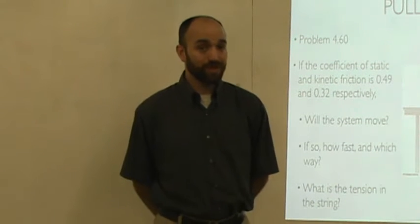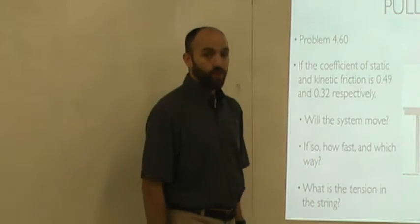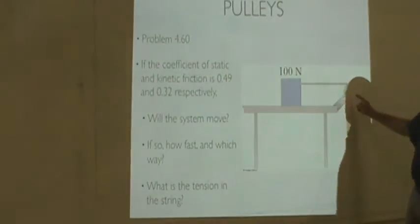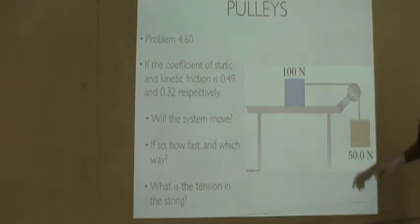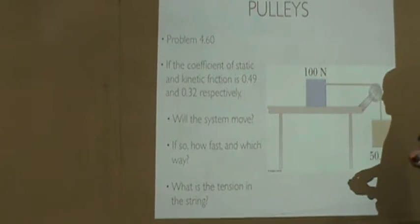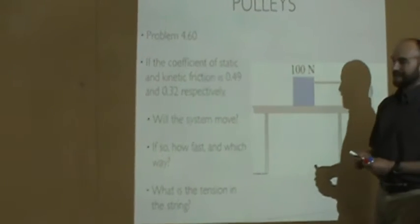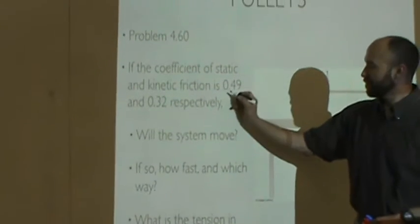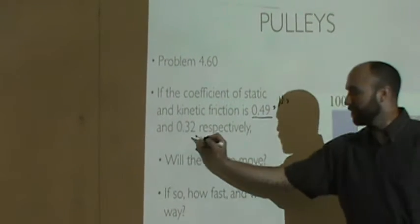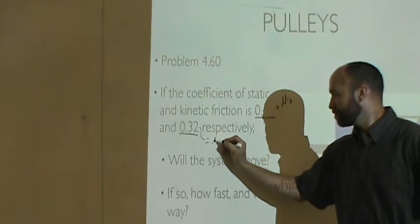We've got one more example left from this chapter, so let's finish it up. This is problem 4.60. It's a pulley problem, which is good because you've got to tackle these on your homework. It tells us we know the coefficients of kinetic and static friction — this one here is mu s, and this one here is mu k.